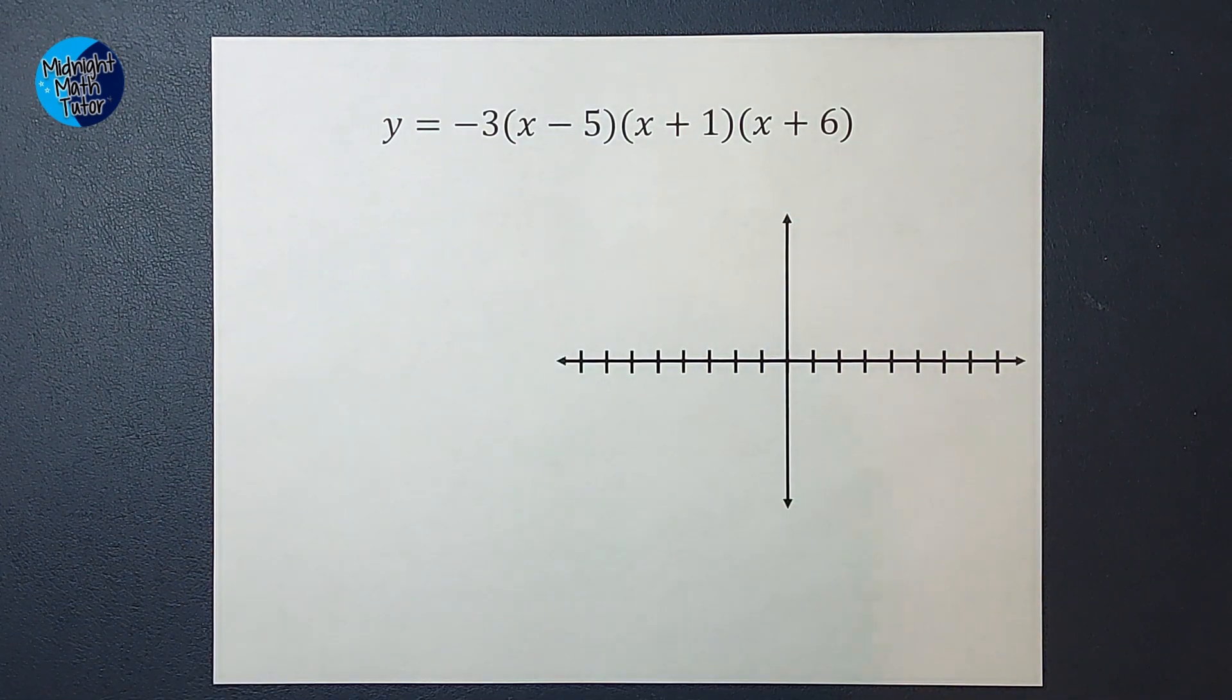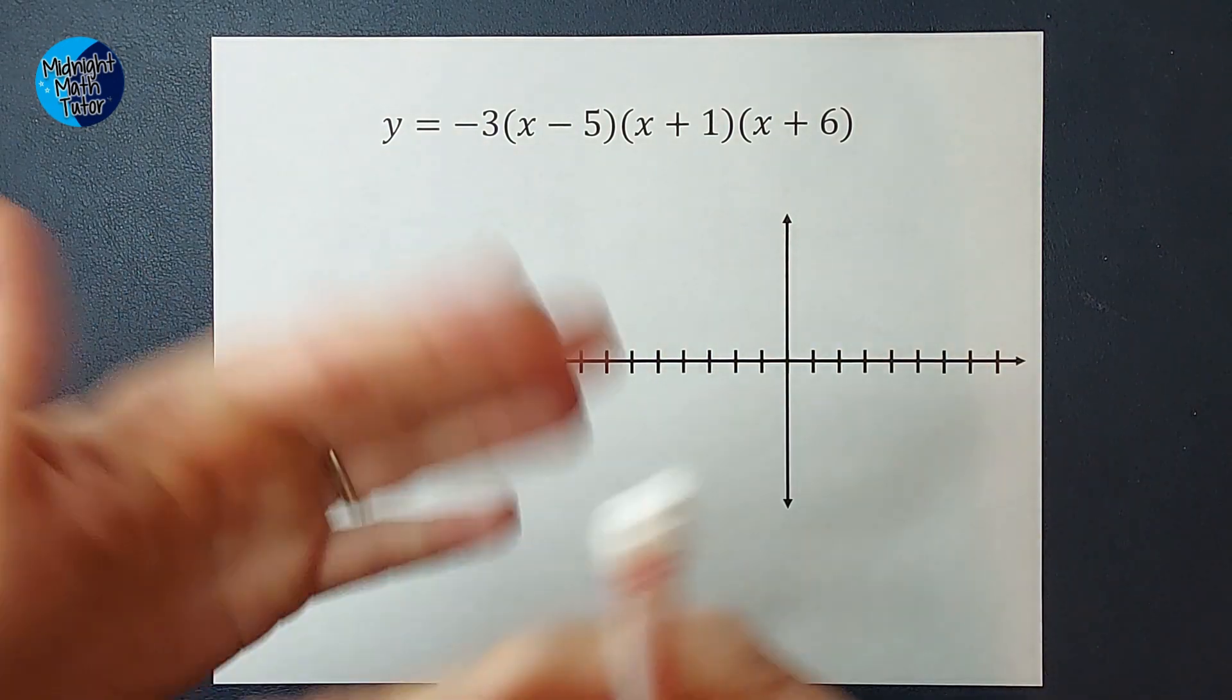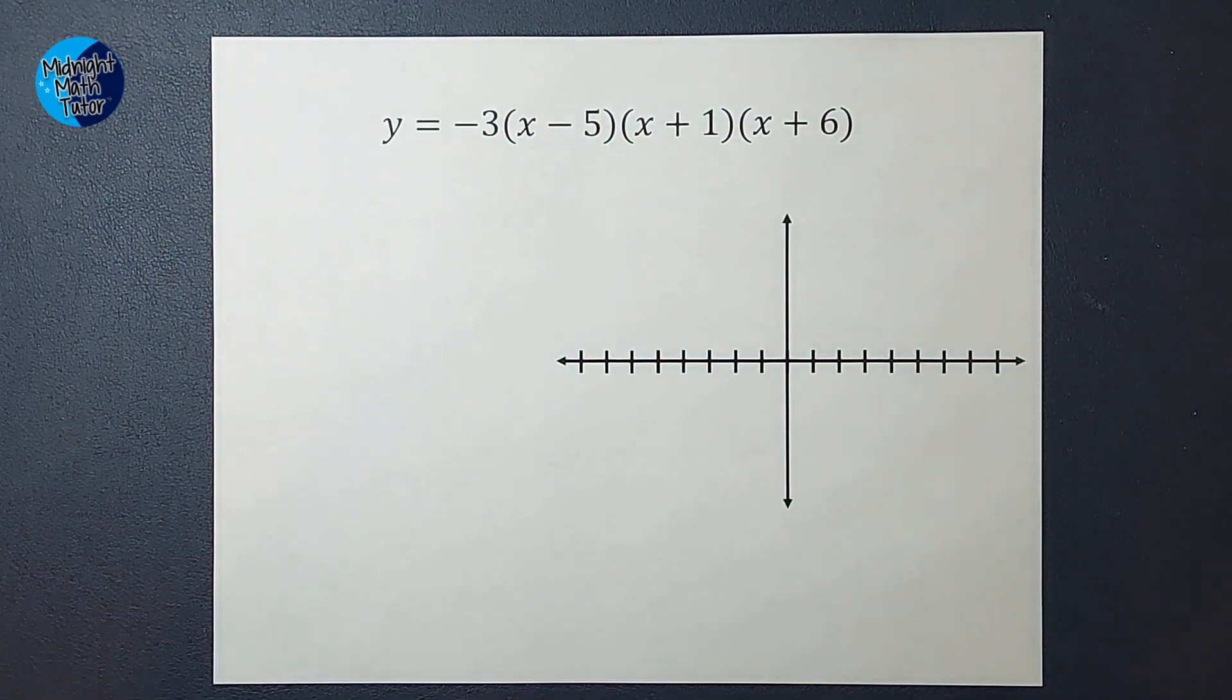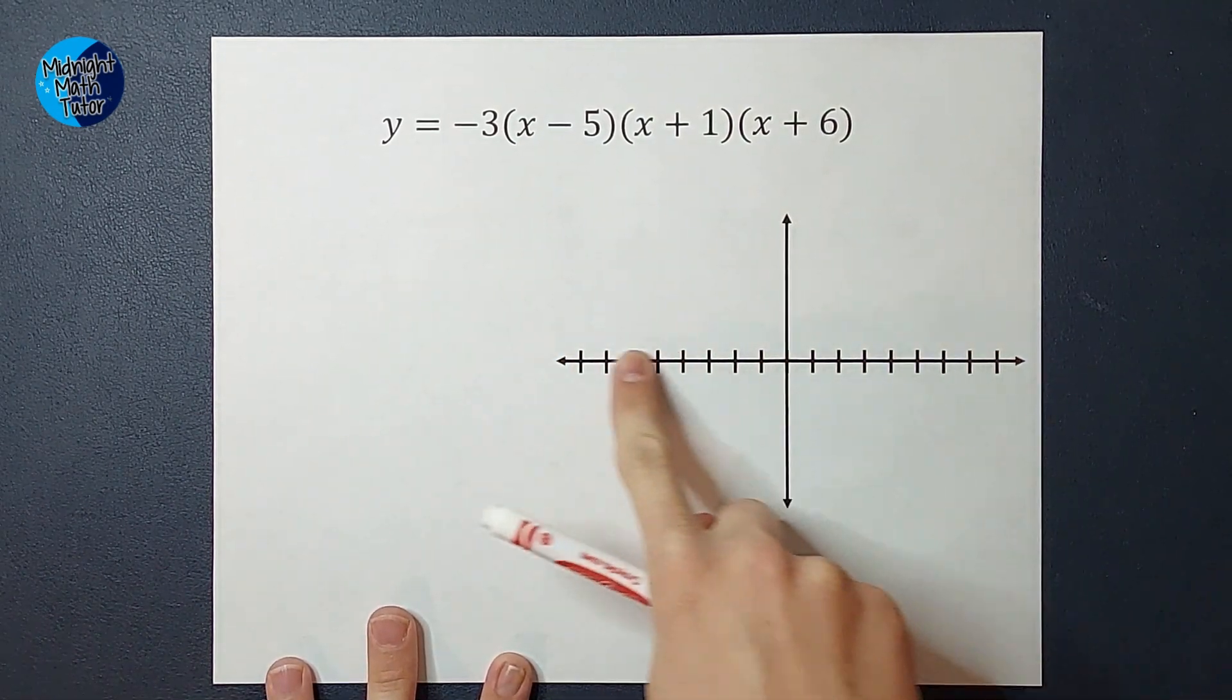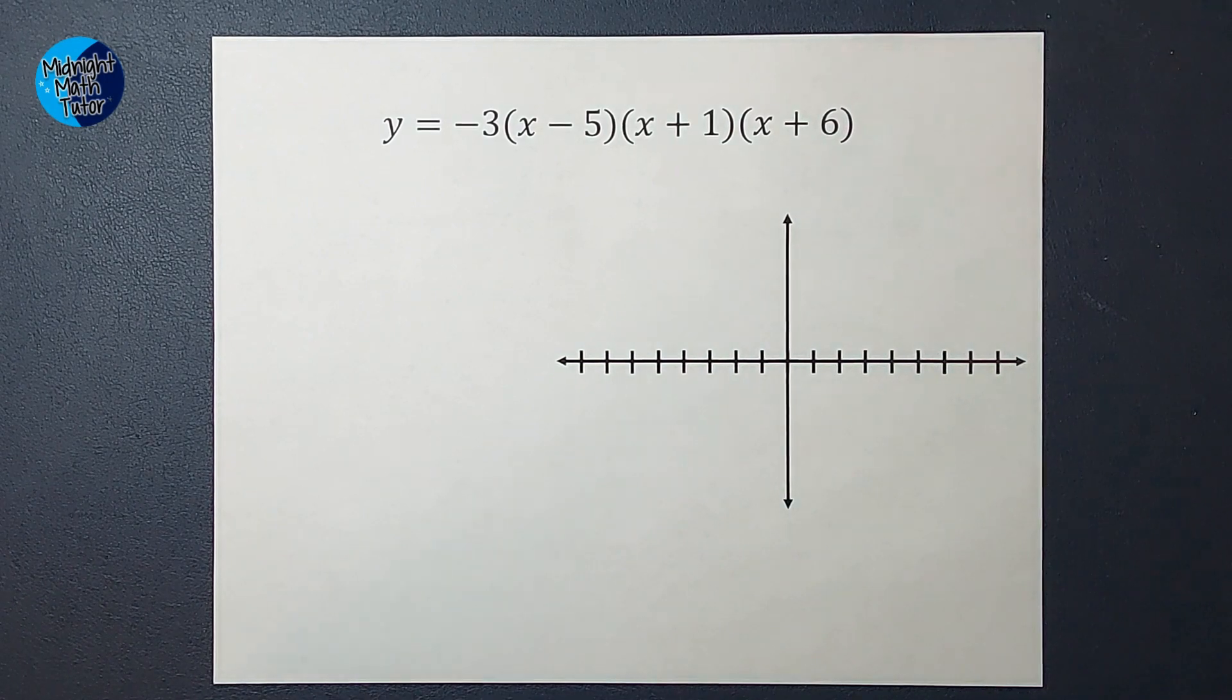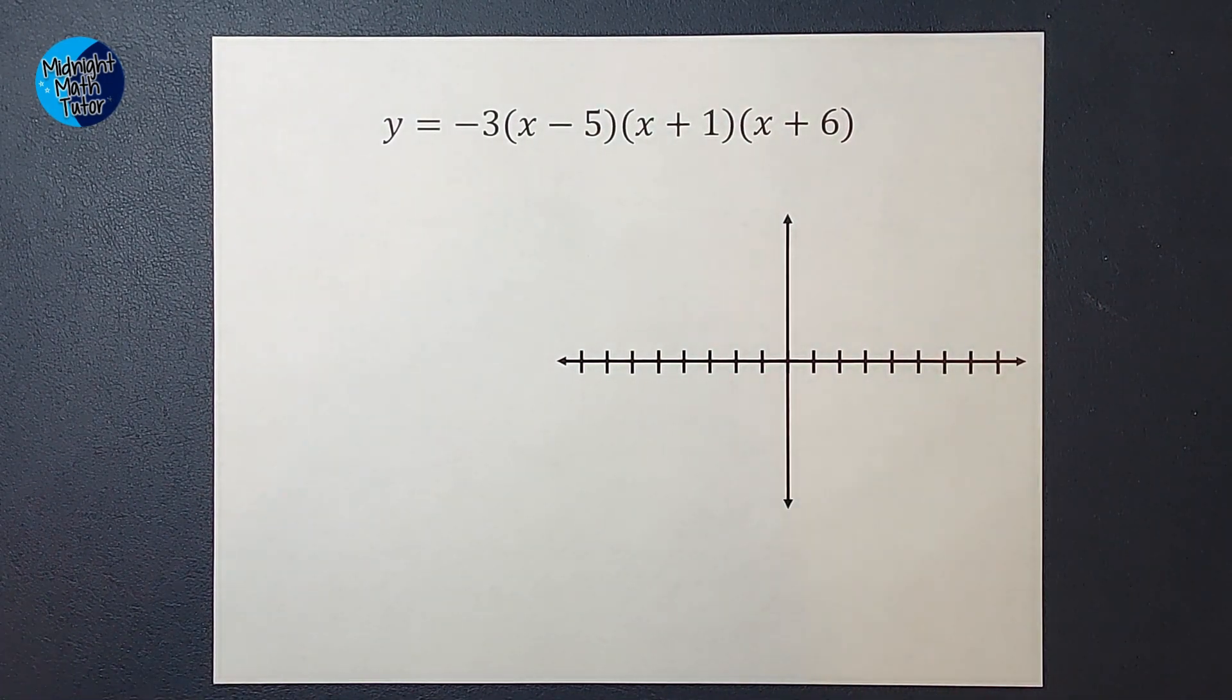Our first step is going to be to factor and find our zeros. Good news is, guess what? We already factored. Isn't that nice? So we're going to factor—well, it is factored—and then find zeros. When I say find zeros, what I really mean is we want to know where our graph crosses the x-axis, and that's where y equals zero.